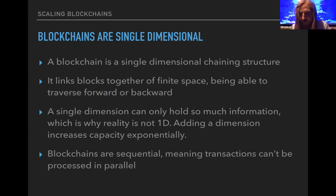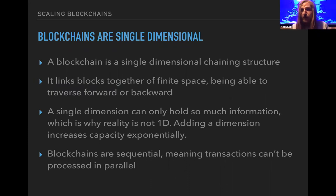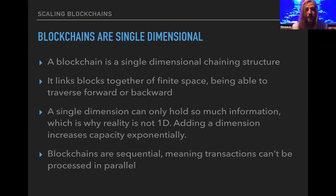Blockchains are sequential — transactions can't be processed in parallel. Bitcoin core did a nice optimization for synchronization by downloading headers and then transactions in parallel, but during actual mainnet processing only one block occupies a given height. If there are competing blocks, only one wins. Therefore it's one sequential series of events — if a transaction depends on a prior transaction, that prior transaction must be fulfilled first. By nature the architecture is single-dimensional, sequential, which is one reason blockchains have difficulty scaling.